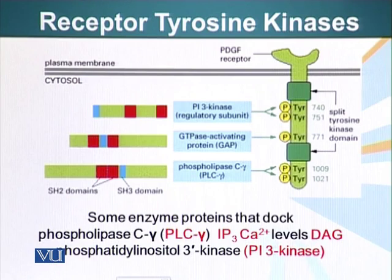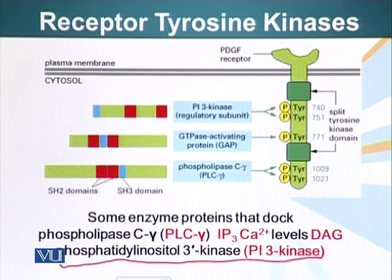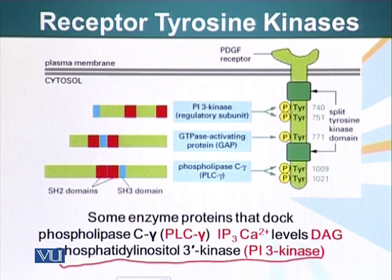The receptor is also a docking site for phosphatidyl inositol 3-kinase, an enzyme which can add phosphate groups to phosphatidyl inositol. As we will see later, when this phosphorylation occurs, it generates docking sites on the plasma membrane for other proteins that have enzymatic activity.